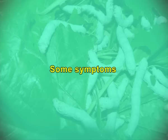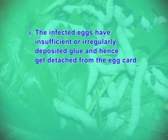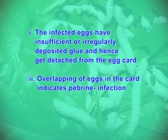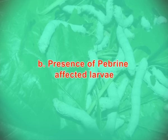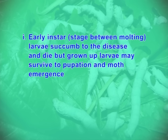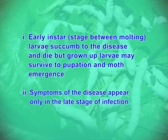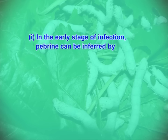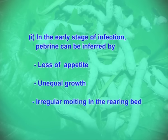Symptoms of pebrine in affected eggs: The infected eggs have insufficient or irregularly deposited glue and hence get detached from the egg card. Overlapping of eggs on the card indicates pebrine infection. Eggs fail to hatch. In early instar larvae, they succumb to the disease and die. In the early stage of infection, pebrine can be inferred by loss of appetite, unequal growth, and irregular molting in the rearing bed.